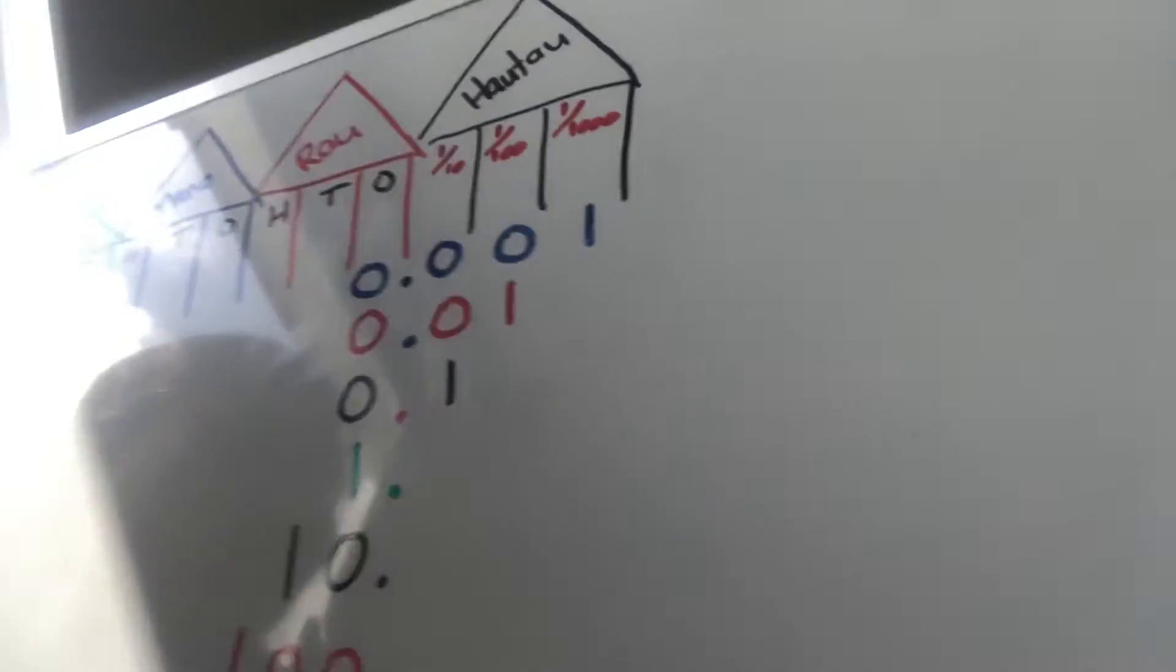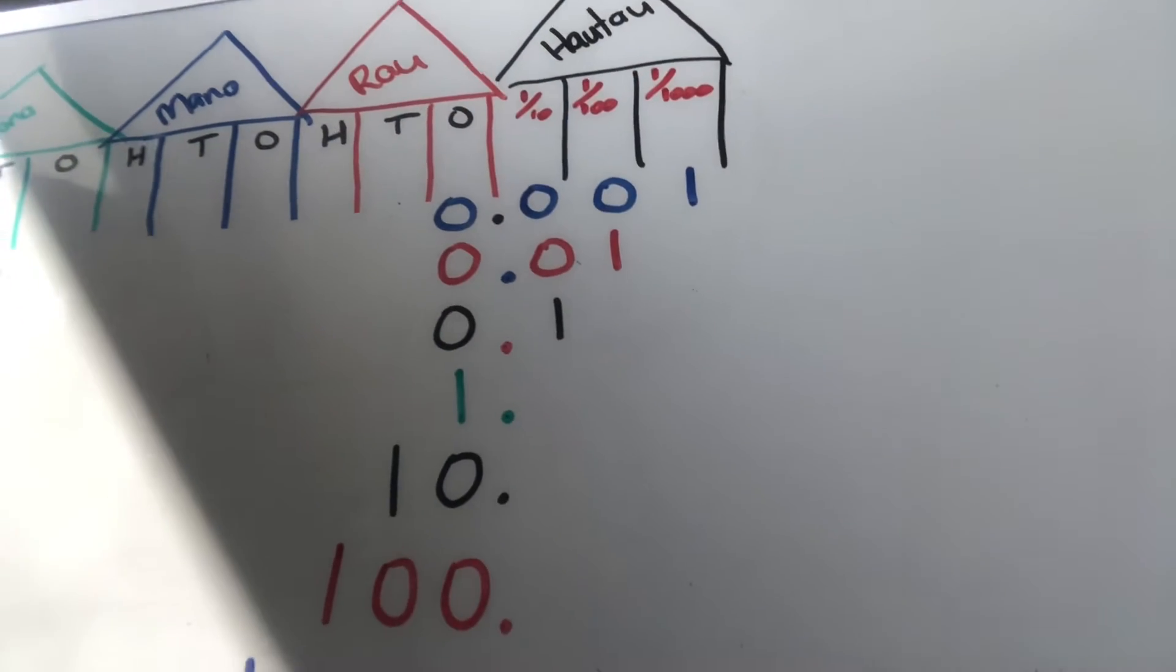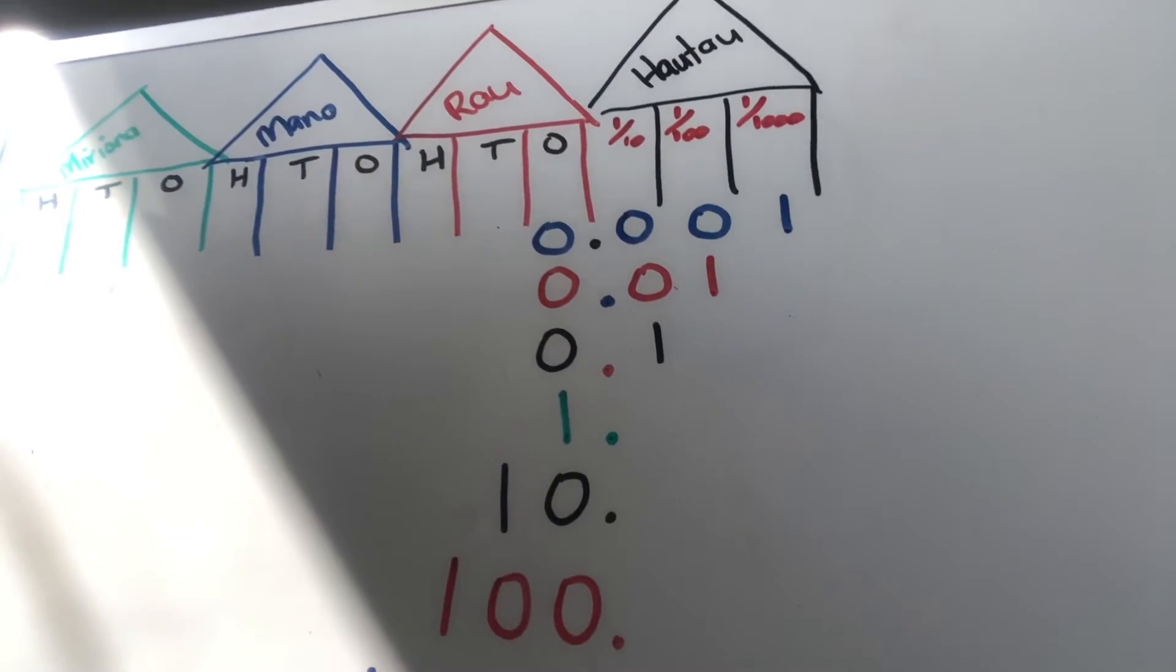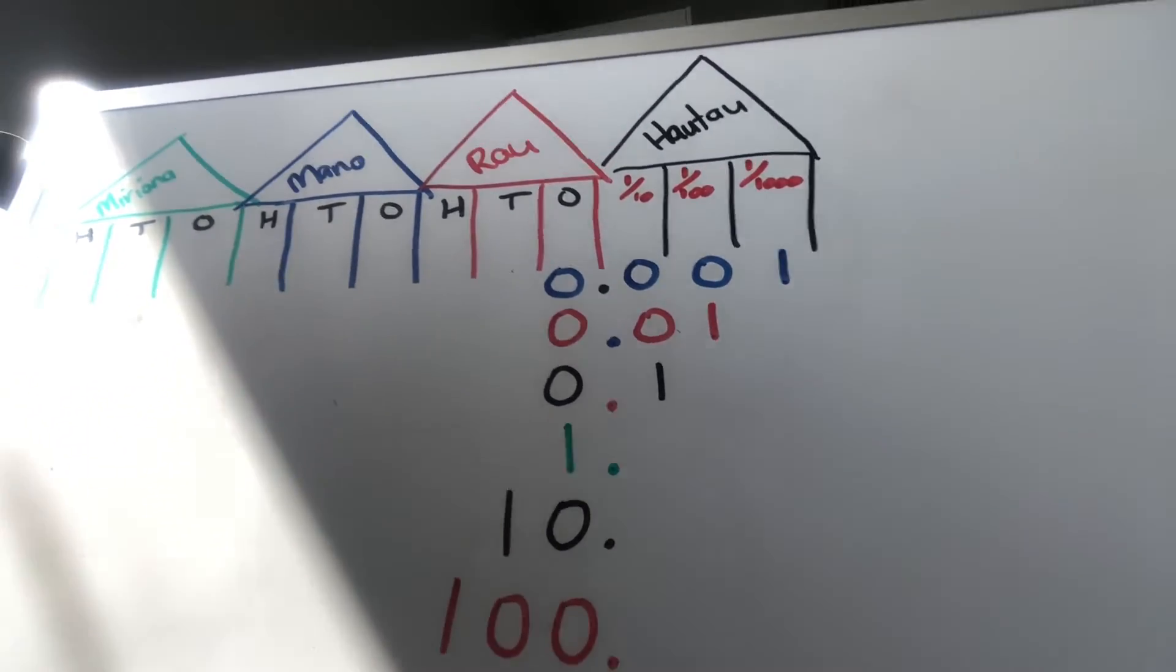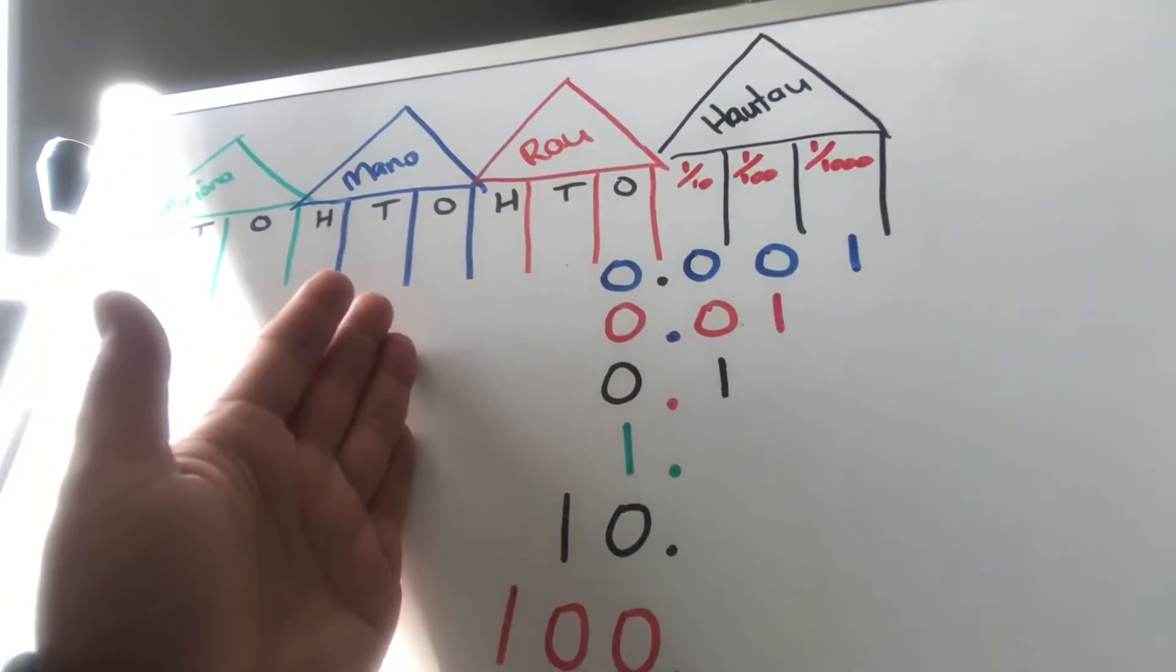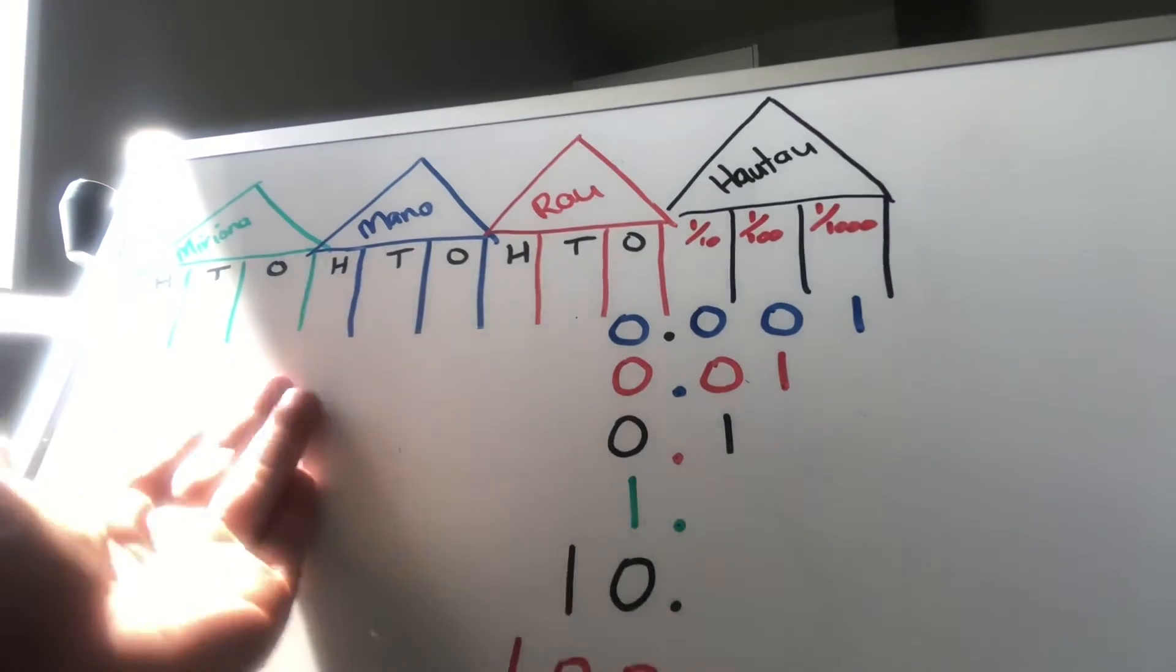So when looking at our place value chart, all of our whare here, which represent our base 10 number system, everything on this side of the decimal point are whole numbers, what we call integers.